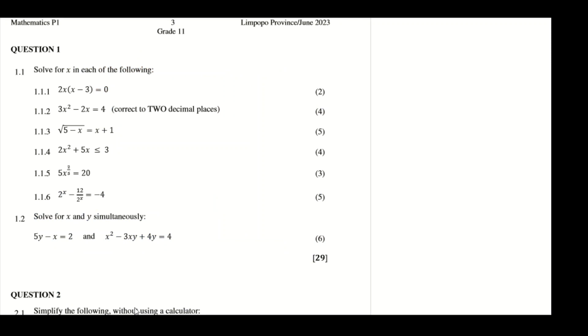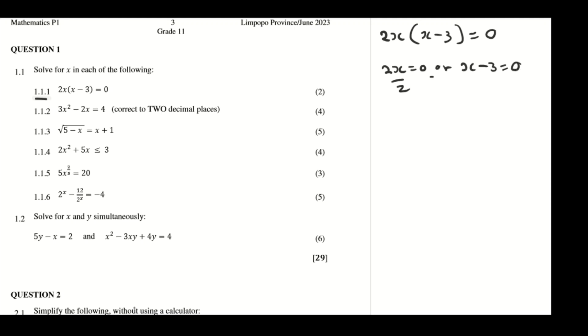Hi, so in this video we're going to be doing a grade 11 maths June 2023 past paper that you guys wrote recently for the province of Limpopo. So now let's solve question 1. In 1.1.1, we are asked to solve for x. You have 2x(x minus 3) equals 0. So you say 2x equals 0 or x minus 3 equals 0, then divide by 2. We get x equals 0 or x equals 3. So these are the solutions for the first problem.